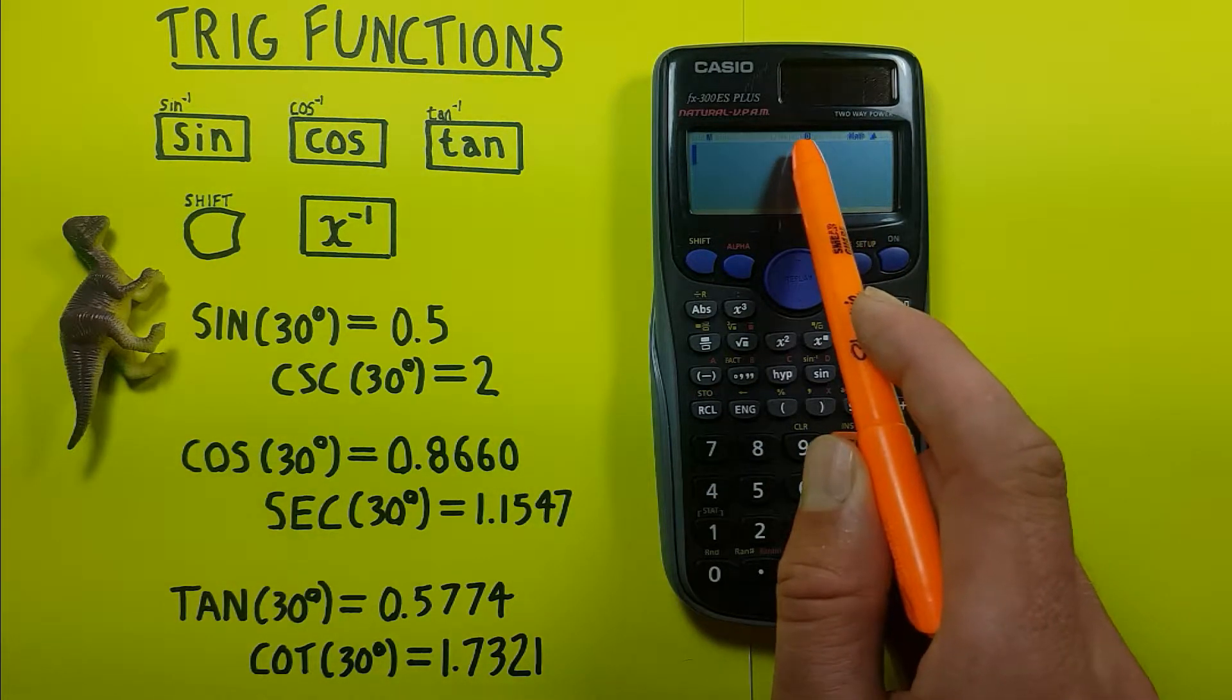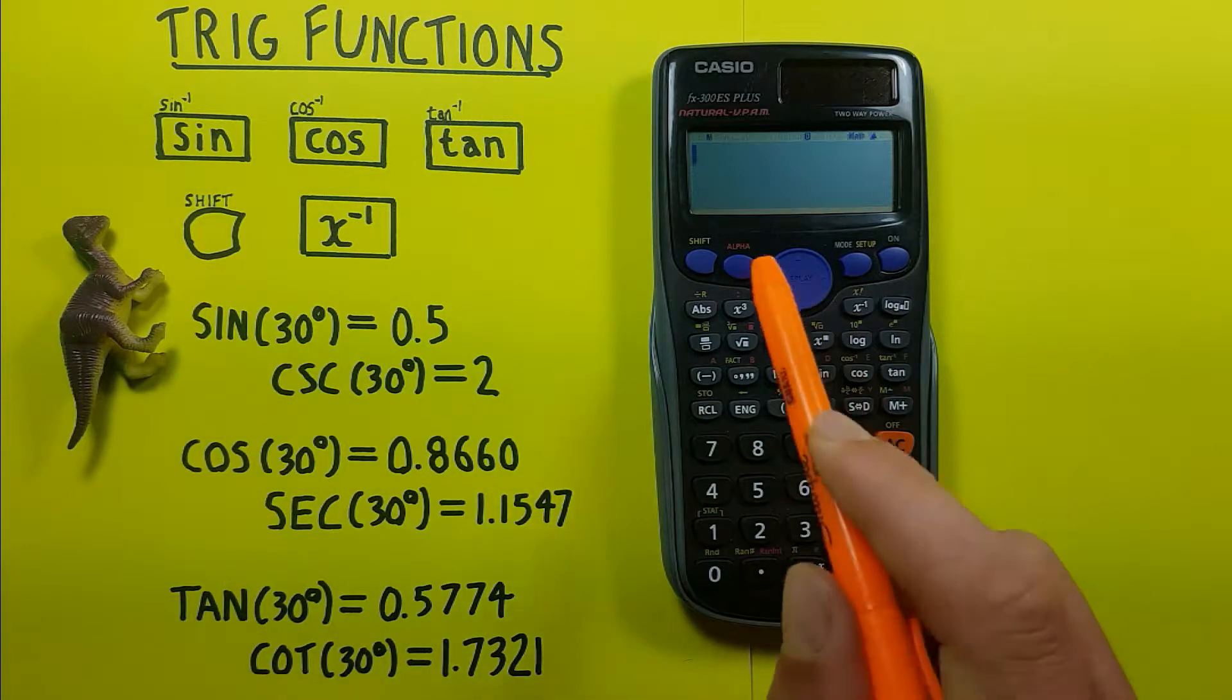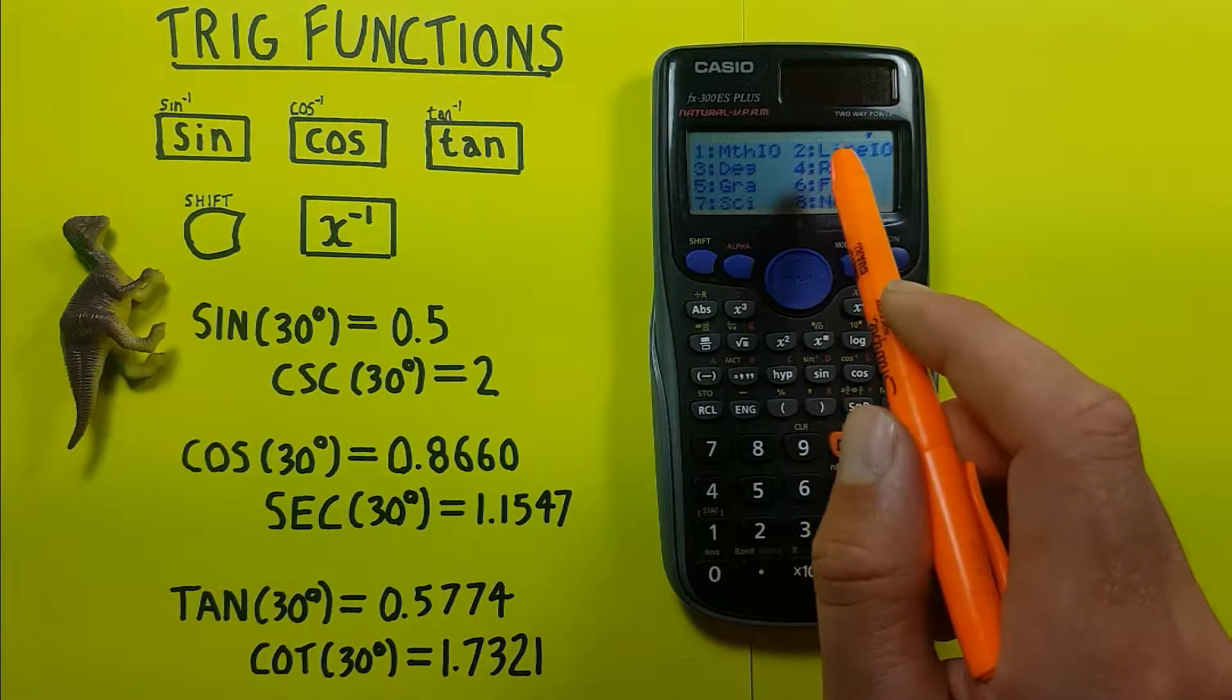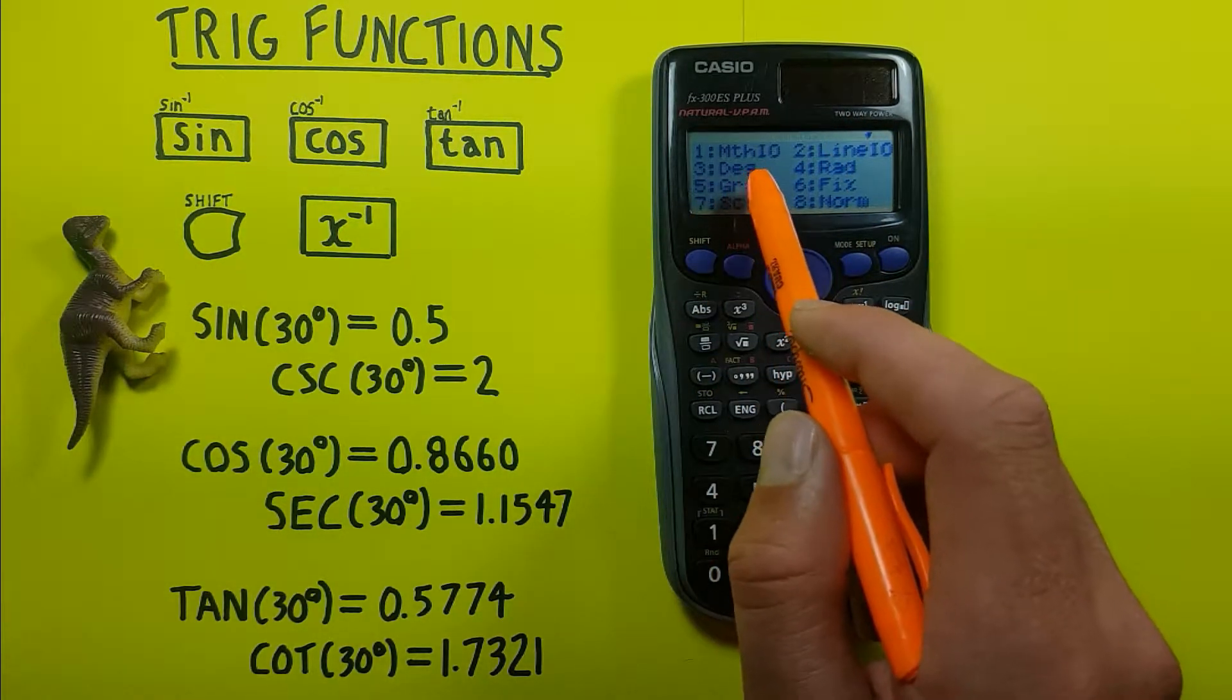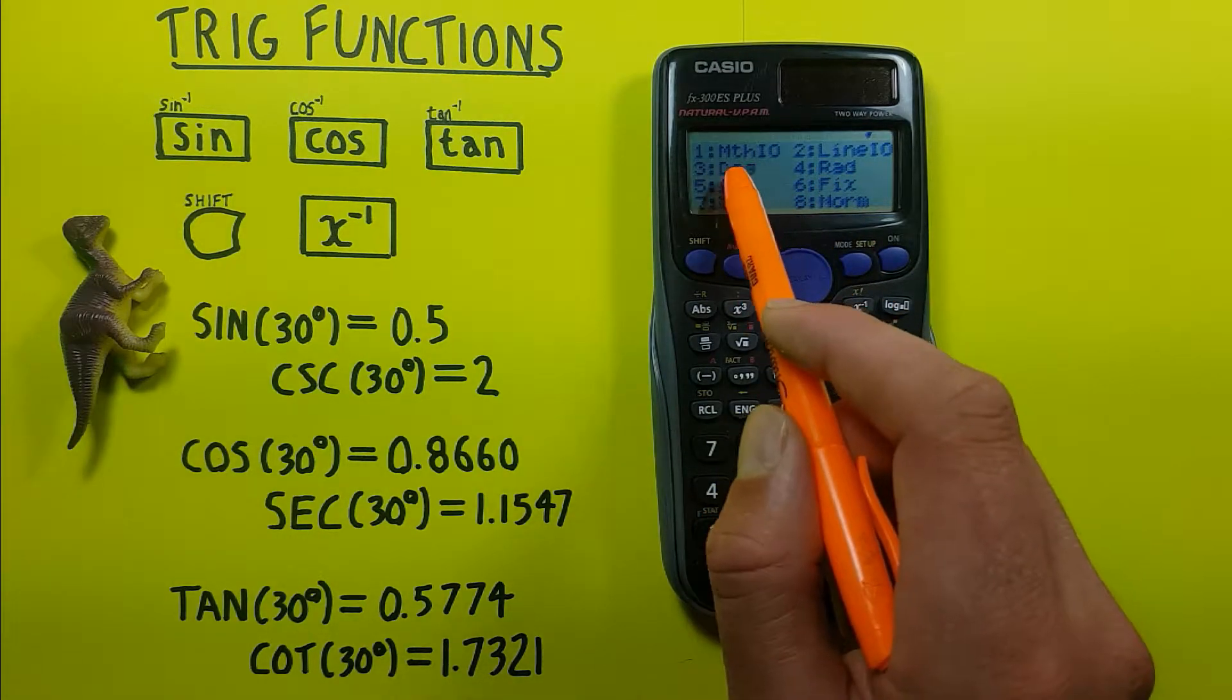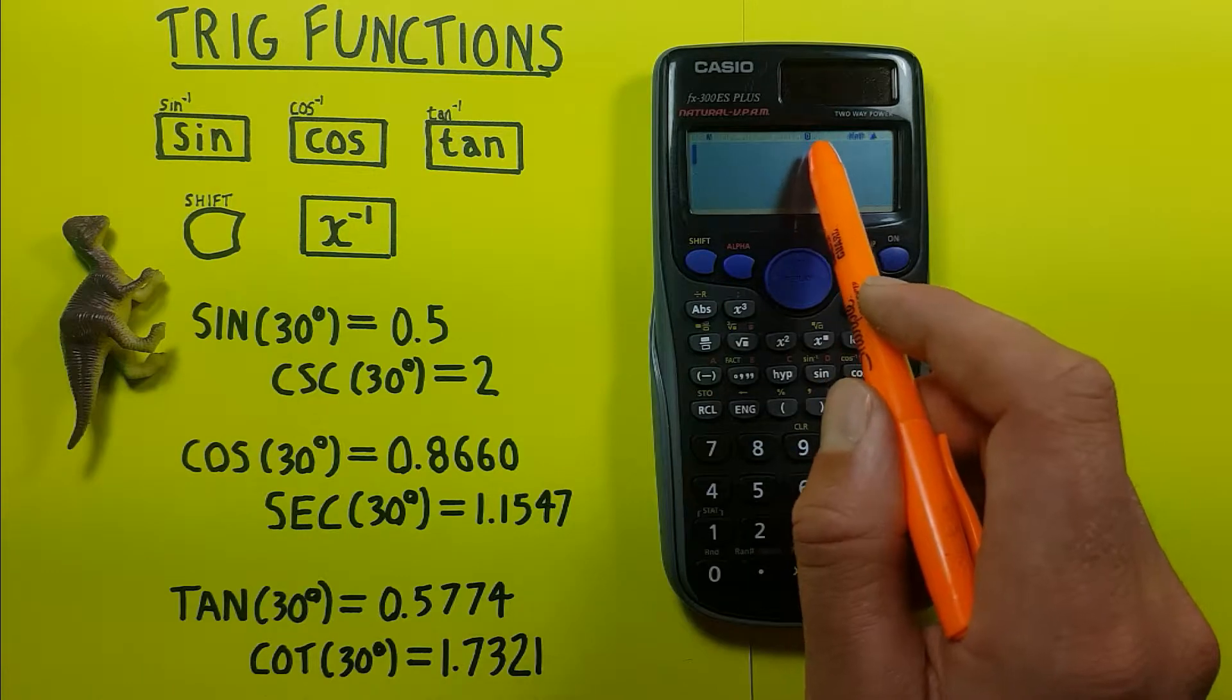If you see something else, we need to change that. To change it we press shift mode, which brings up this menu here. It can be either in degrees, grades, or rad mode. We want it in degrees mode, so we press 3 and now there should be that D at the top.